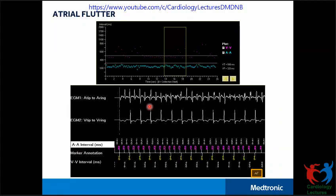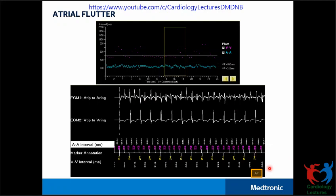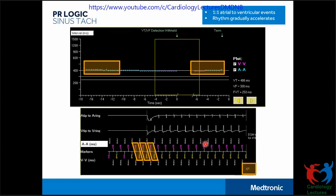In the second example, looking at the plot again, atrial rates are faster than the ventricular rate. Looking at the EGM, atrial rates are higher than ventricular, but for every ventricular interval we consistently see two P waves. This allows the device to call this out as atrial flutter and withhold detection for that particular episode.